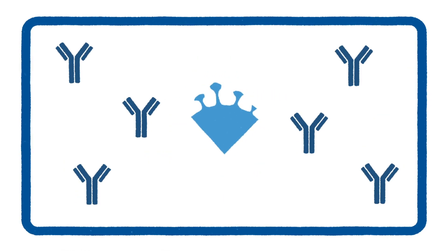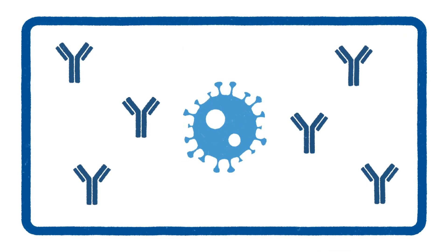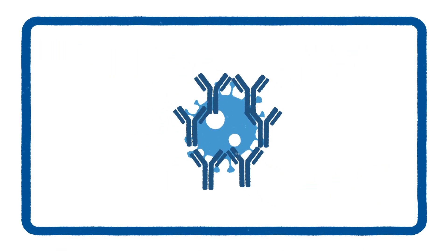Our immune system identifies these viral components as foreign and subsequently protects us by producing antibodies and other forms of immunity. If your body encounters the virus in the future, the antibodies can bind to the virus, neutralize it, and prevent an infection.